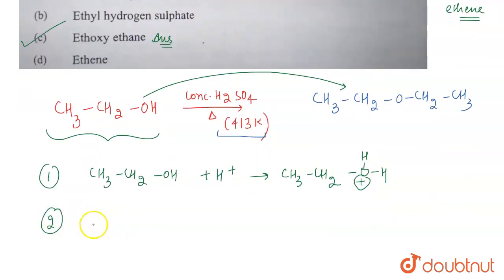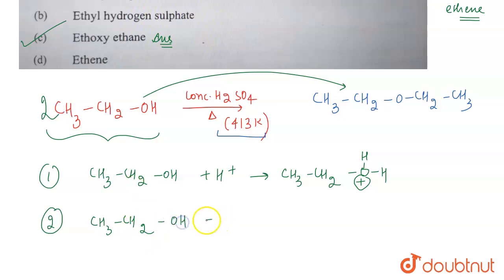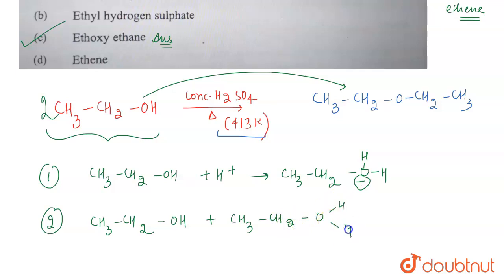The second step involves another mole of ethanol — two moles of ethanol are used here. So we have CH₃CH₂OH, which interacts with CH₃CH₂OH₂⁺.